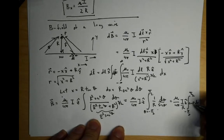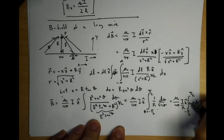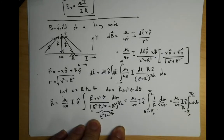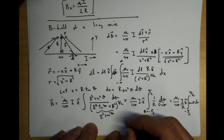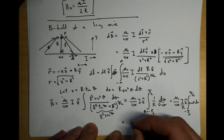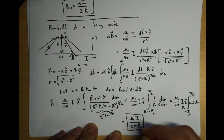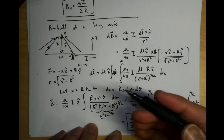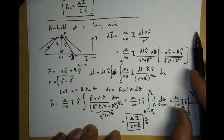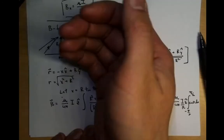This integral of cosine theta d theta becomes sine theta. Sine of pi/2 is 1, minus sine of minus pi/2 is minus 1, so one minus minus one equals two. So B equals mu zero I over two pi R in the z-hat direction, which means this thing is pointing out of the page.